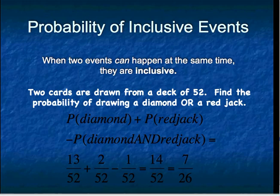But there is an overlap or an inclusion. The jack of diamonds fits both conditions — it is both a diamond and a red jack — so we don't want to count it twice. We subtract 1 out of 52. Our new probability for this event is 14 out of 52, or 7 out of 26.